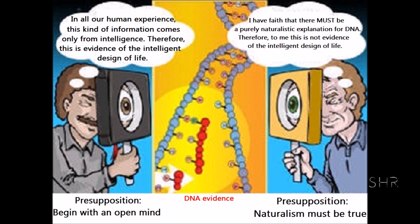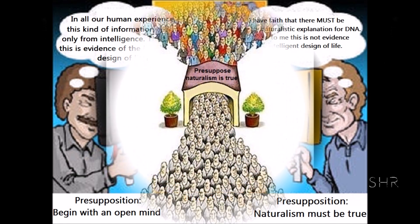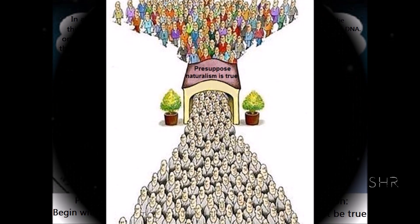I think the evolutionists are engaged in a natural law of the gaps argument, because there are no known natural forces or combination thereof that can create biologically complex information as discussed in Signature in the Cell — they just haven't found that law yet, according to them. It's really a naturalism of the gaps. This is what methodological naturalism is all about: even if we don't have an adequate naturalistic explanation, we're going to hold out for one at all costs.